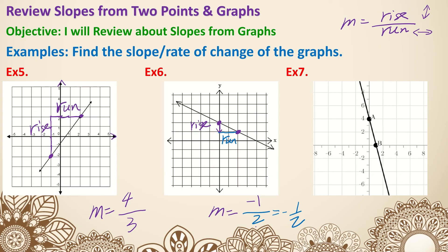Pause here and try examples 7 through 10. For example 7, the point on the left is A. Go vertical first: down 1, 2, 3, 4 — that's a negative 4 rise. Then horizontally, go to the right by 1 — positive 1. Negative 4 over 1 simplifies to negative 4 as our slope for example 7.